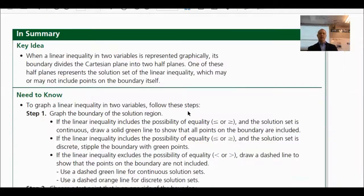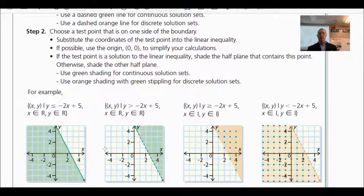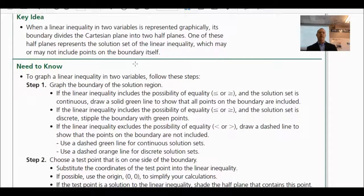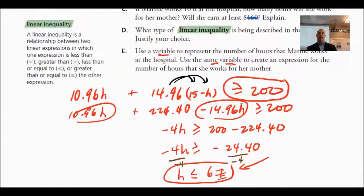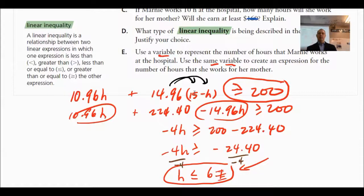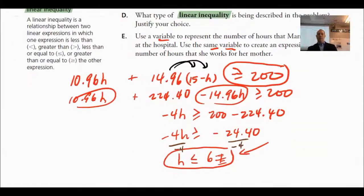Let's get to the key ideas. When a linear inequality in two variables is represented graphically, its boundary divides the Cartesian plane into two halves. In the getting-started lesson we came up with an inequality for hours of work. When graphed on the coordinate plane, the equation of the line forms the boundary that separates the two regions.